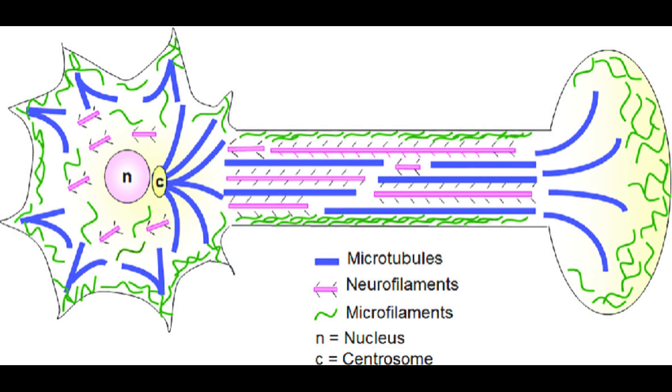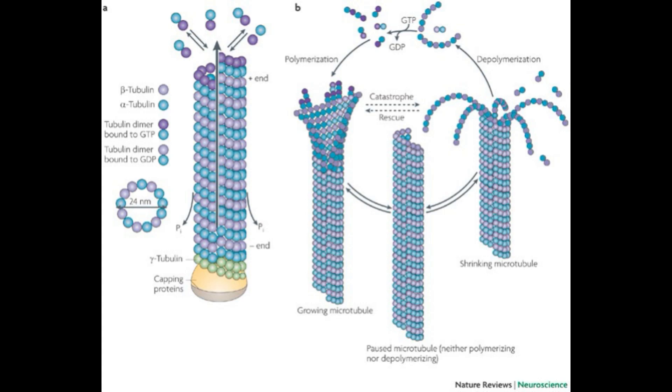Microtubules, composed of tubulin proteins arranged in 13 columns, transmit information through their dynamic oscillatory activity. This process may underlie a form of computation that is crucial to consciousness.